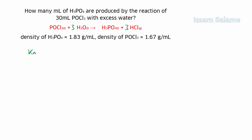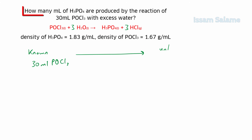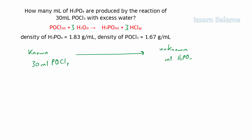In this exercise, the given amount is 30 milliliters of POCl3, which we are going to call the known. The amount required to be calculated is the milliliters of H3PO4, which we are going to call the unknown.